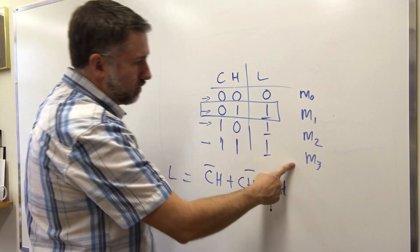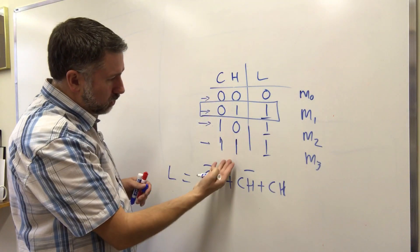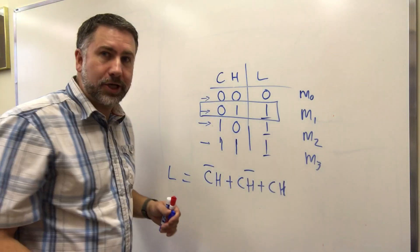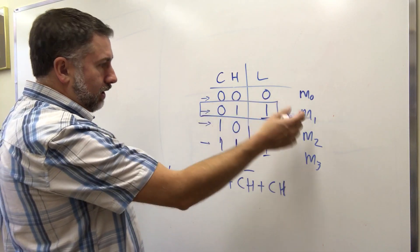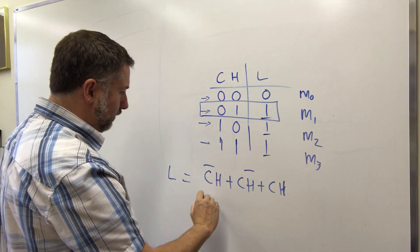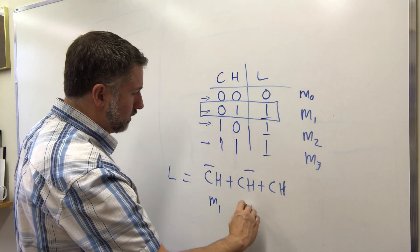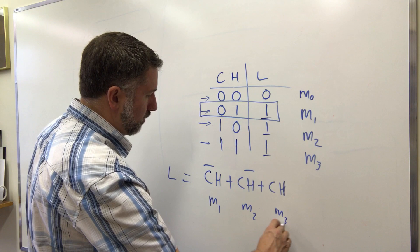So minterms, these are the names for them and these are the corresponding inputs and this is what it looks like in an expression. Now what's the shorthand? Well instead of writing this stuff out, we can just write out the minterm. This is minterm 1 and this is minterm 2 and this is minterm 3.